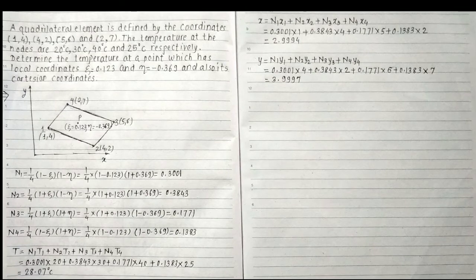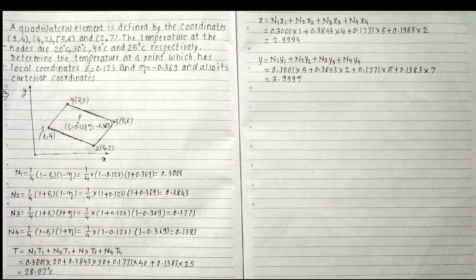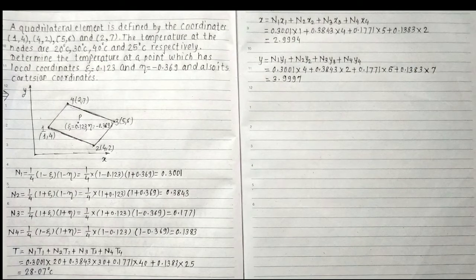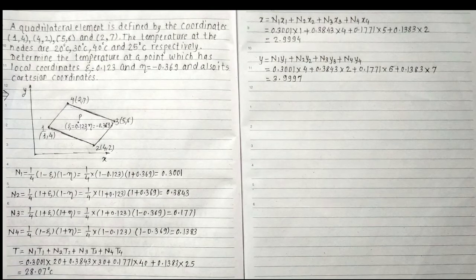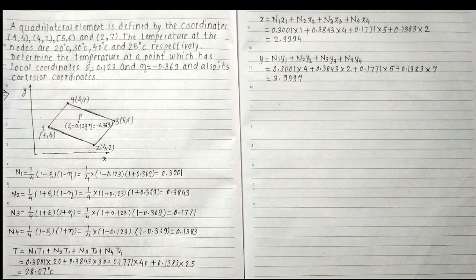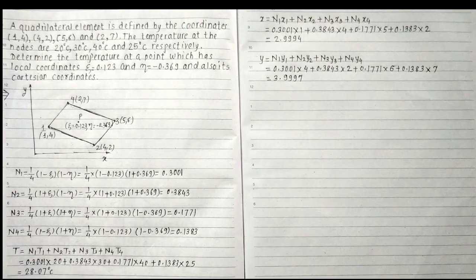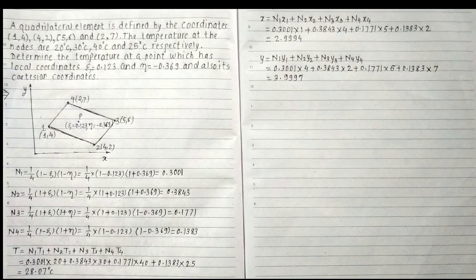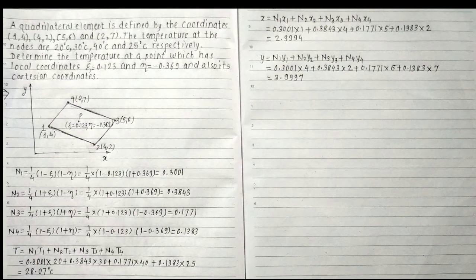Now I will calculate the temperature at zeta = 0.123 and eta = -0.369 as T = N1·T1 + N2·T2 + N3·T3 + N4·T4. So it equals 0.3001×20 + 0.3843×30 + 0.1771×40 + 0.1383×25.